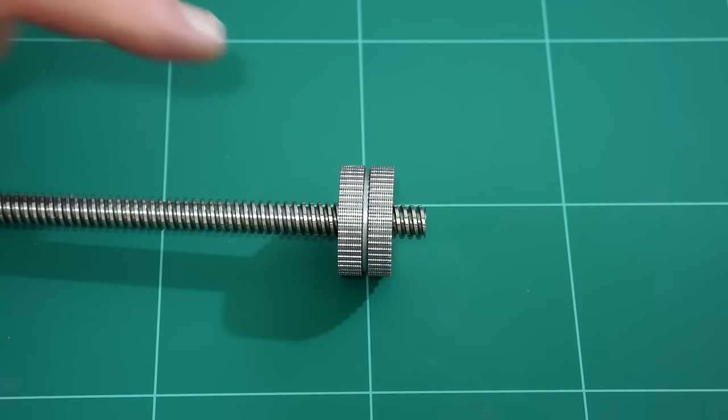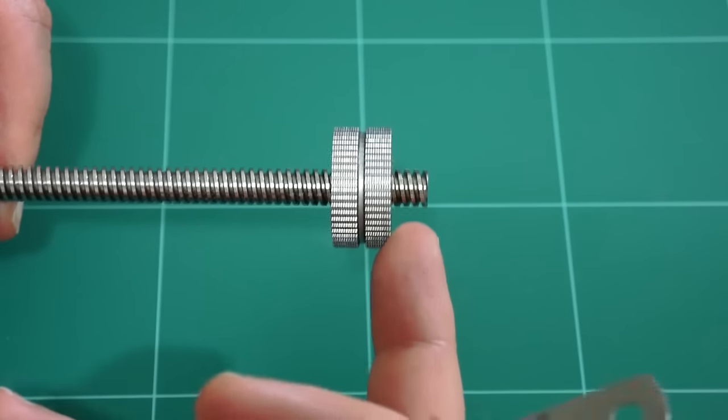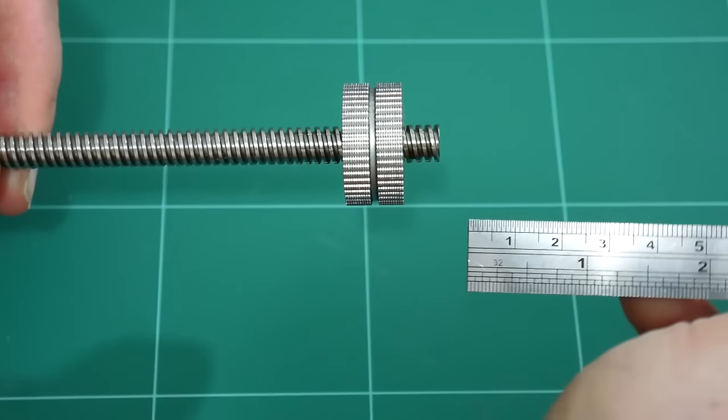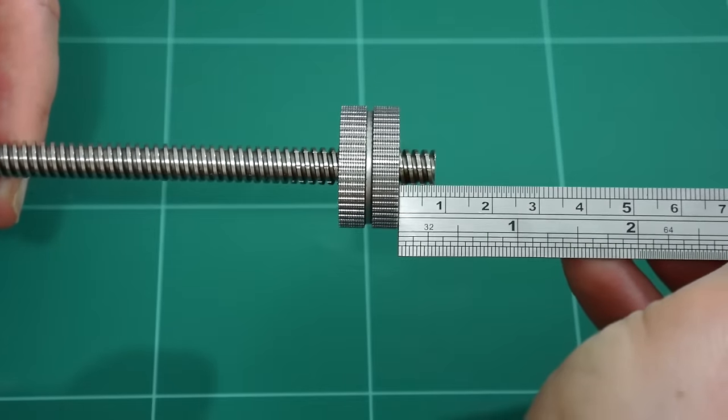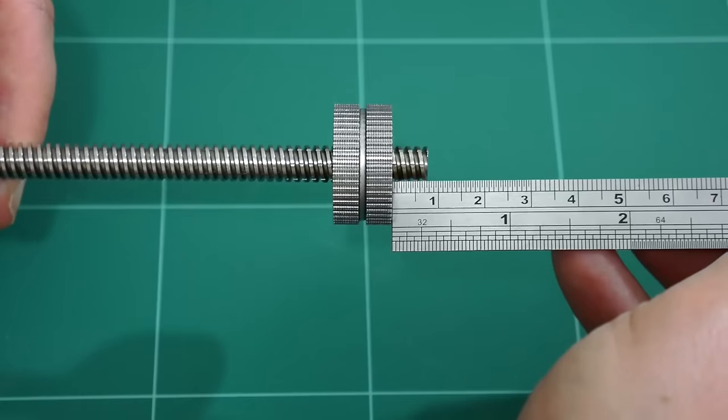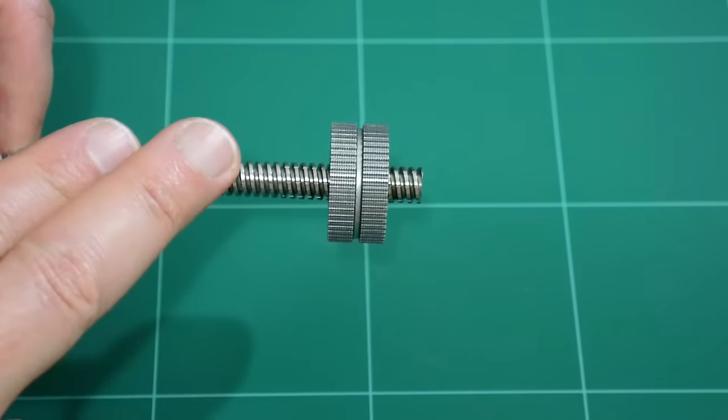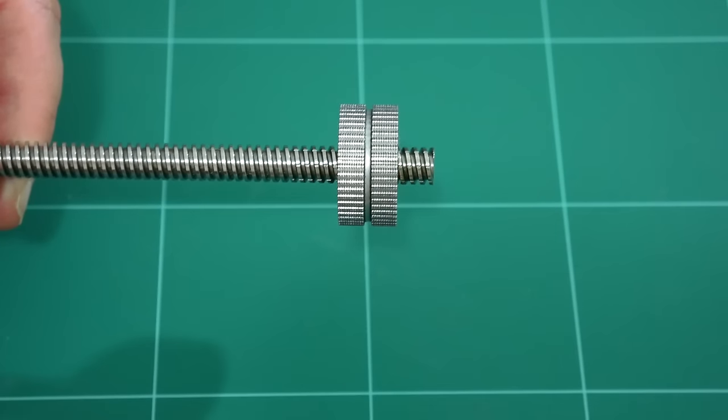Before we remove the rotor magnet from the lead screw, we just need to see how much of the lead screw is actually hanging out from the base of the rotor magnet. And just using a metal ruler, we can measure approximately eight millimeters. So we just need to ensure that when we glue this new rotor magnet onto a new lead screw, that there is eight millimeters at the base.